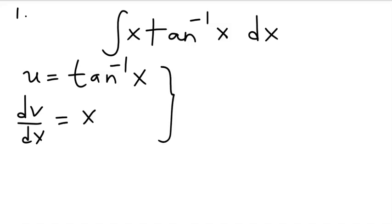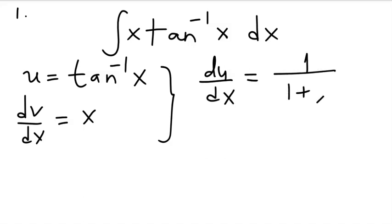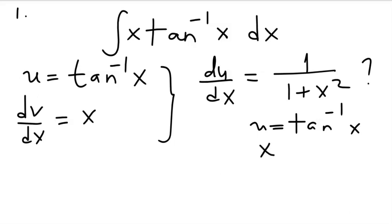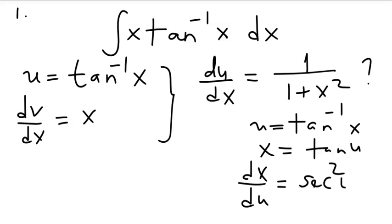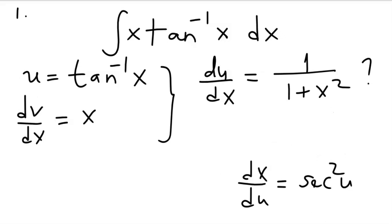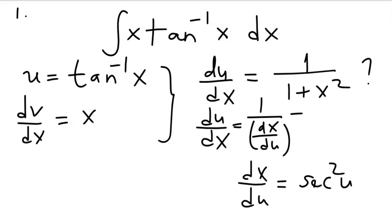So du/dx will simply become 1 over 1 plus x squared. We know u is arctan(x), so that means x is tan(u). So dx/du is sec²(u), which means du/dx, being 1 over dx/du, is simply cos²(u).